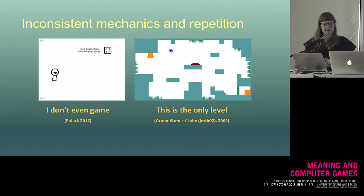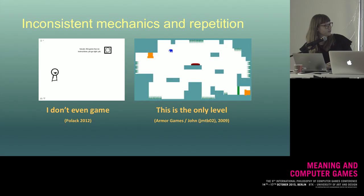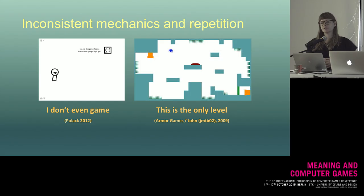Another example is 'This Is the Only Level,' where the player plays the same level over and over again, but the mechanics change each time. The player has to reach from the portal on the left to the portal on the right, and sometimes she also has to press a key to open a door, sometimes not. The mechanics change every time — sometimes she has to do less, sometimes more. This also embodies Baudrillard's idea of repeating something until it becomes meaningless.